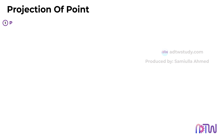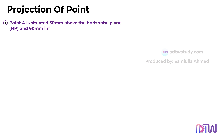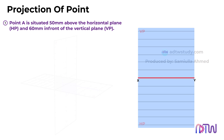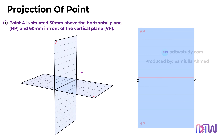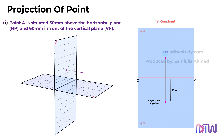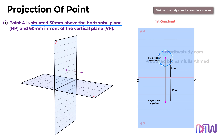Let's explore these scenarios further with some illustrative questions. Point A is situated 50mm above the horizontal plane (HP) and 60mm in front of the vertical plane (VP), meaning the point is in the first quadrant. The top view of the point will be below the xy-line, while the front view will be above the xy-line. Both views align vertically, with the top view 60mm below the xy-line and the front view 50mm above the xy-line.